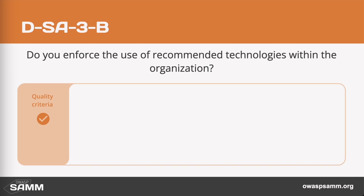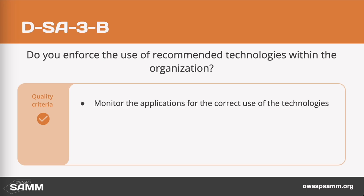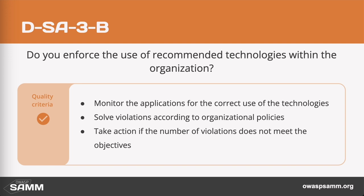At level three, the technology recommendations are enforced. The quality criteria include monitoring things for the applications in scope and solving violations according to your policies, which should specify what happens to violations. Finally, you need to take action if the violations fall outside specific KPIs.